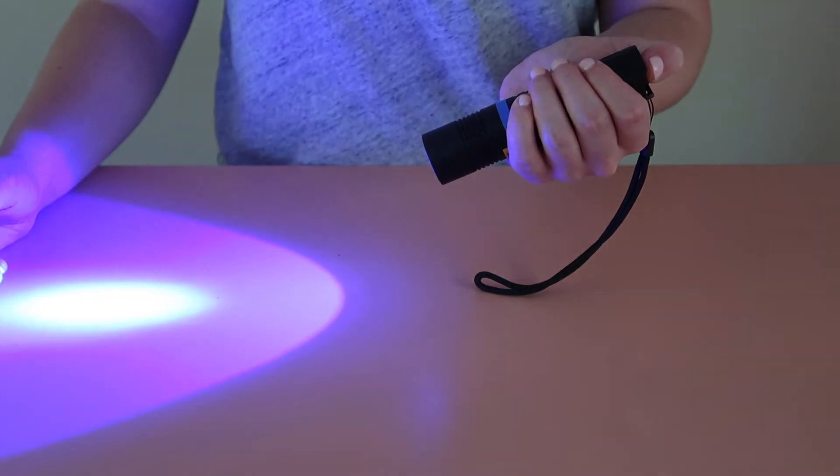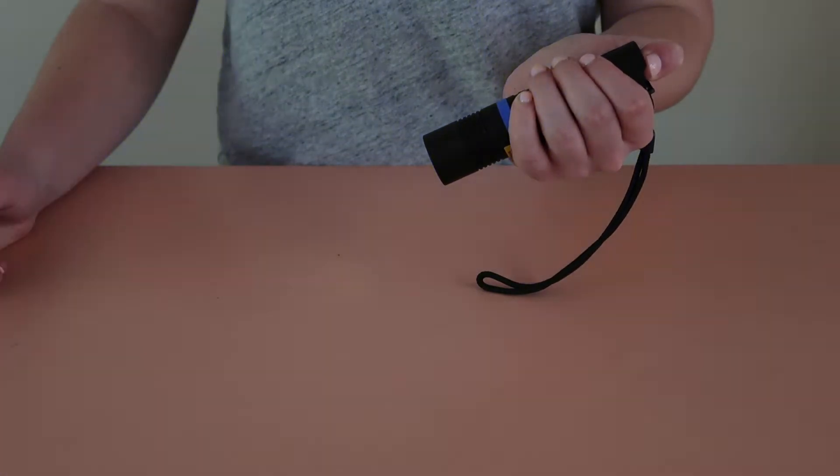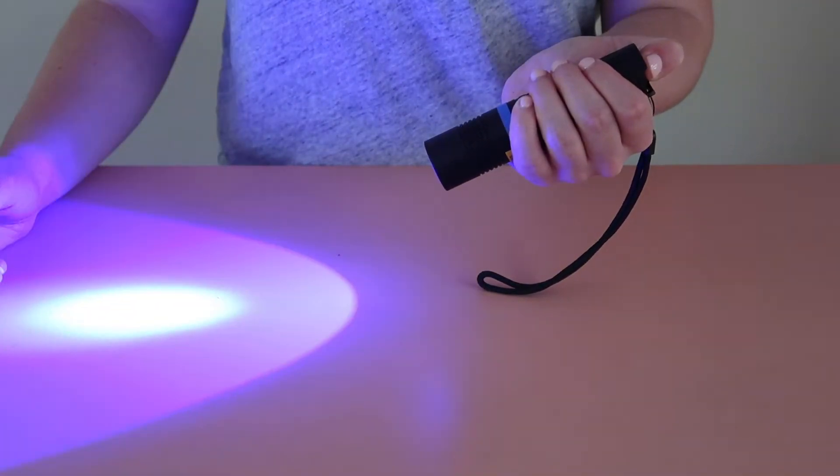To change to high intensity, press the switch again, but this time just far enough for the light to go out without clicking, then release. Repeating this action slowly will toggle between the two power levels.